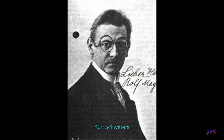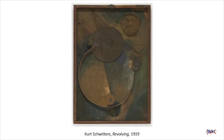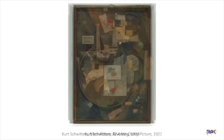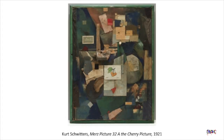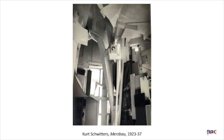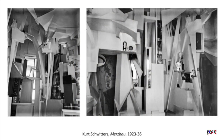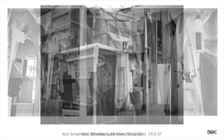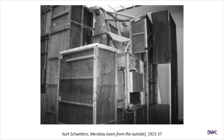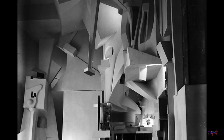In 1918, Kurt Schwitters introduced attaching bits of debris, wood, and garbage to his paintings. He called this approach Merz, a nonsense word that he used to describe his process. In 1923, he began to enlarge this idea by converting a room in his house in Hanover into a living art environment. The room was completed in 1933 and eventually expanded to six rooms, which he called Merzbau.